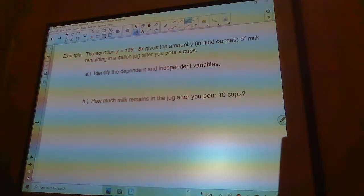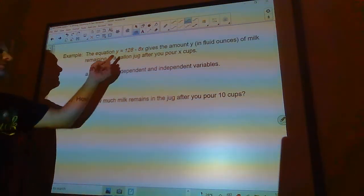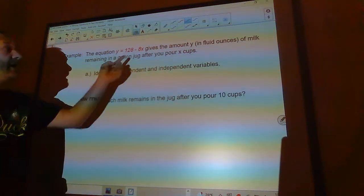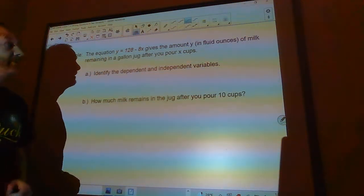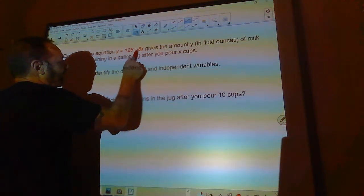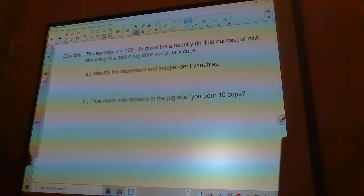The equation y equals 128 minus 8x gives the amount y in fluid ounces of milk remaining in a gallon jug after you pour x cups. Here's the deal. A gallon has 128 fluid ounces in it. And a cup has 8 fluid ounces in it. So every cup that you take would subtract 8 ounces from this.